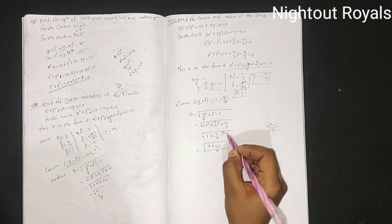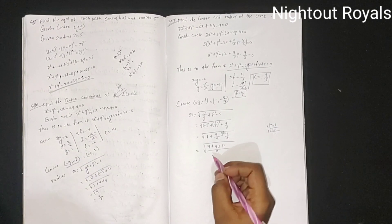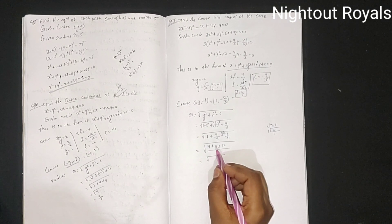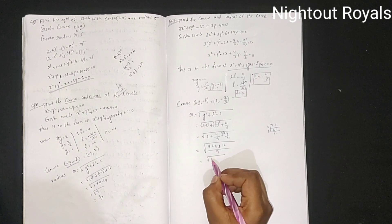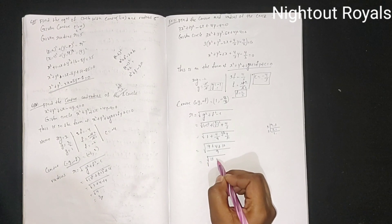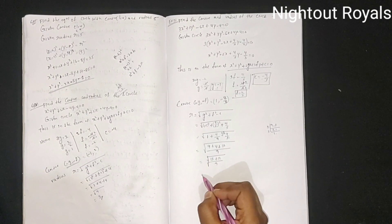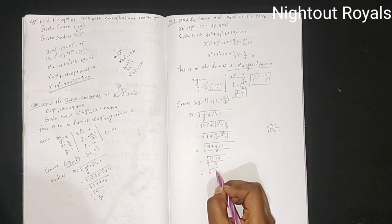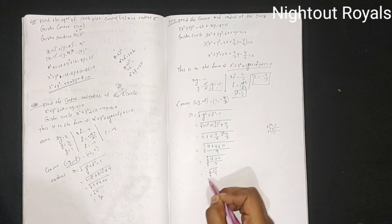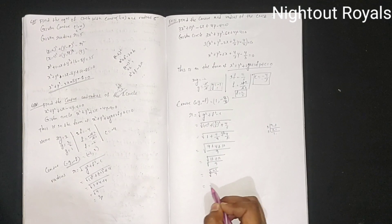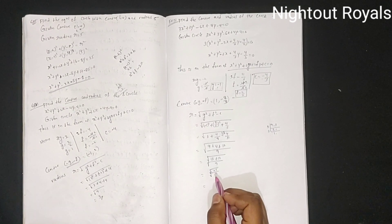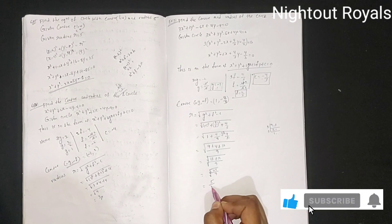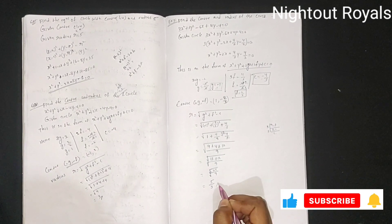Continuing the radius calculation: r = √(9/9 + 4/9 + 12/9) = √(25/9) = 5/3. So the radius is 5/3.